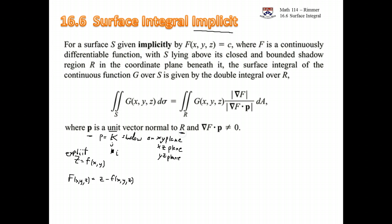The region R is a shadow region in a coordinate plane. We need to take this dot product between the gradient of F and P, and there's our multivariable function G that we're integrating over the region S. Alright, let's go work an example.